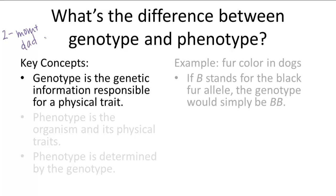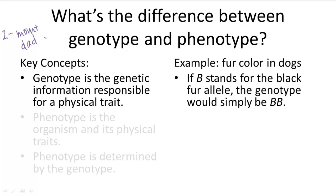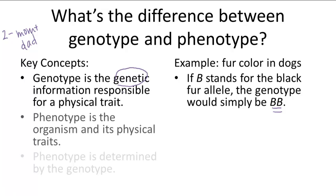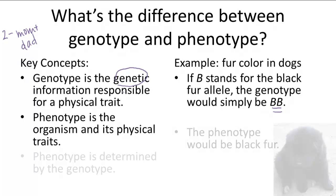For example, let's say in the color of dog fur, big B stands for the black fur allele. If both the dog's parents have black fur and pass down a black fur allele to their offspring, the dog's genotype is big B, big B. This is describing the genetic makeup of the dog. So what actually manifests physically from these two alleles is what we call phenotype. The phenotype of the dog would be black fur, and that means the phenotype is always determined by the genotype.